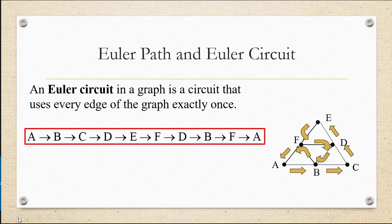So this is an example of an Euler circuit. It's a circuit because it begins and ends at the same place. It's an Euler circuit because it hits every edge exactly once.